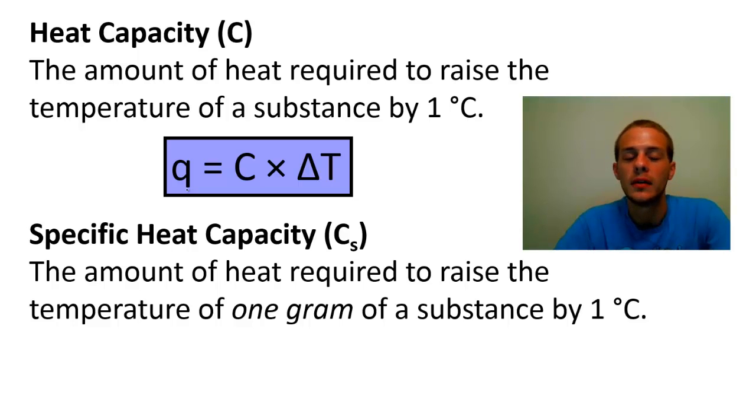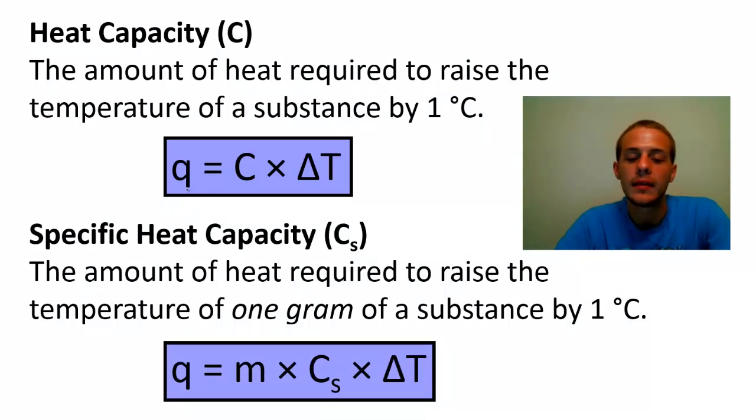And so if we use an equation that incorporates specific heat, then we're going to get this equation down here where we have the amount of heat absorbed is going to be the product of three terms: the mass m, the specific heat C sub s, and then the change in temperature delta T. So q equals m times Cs times delta T.